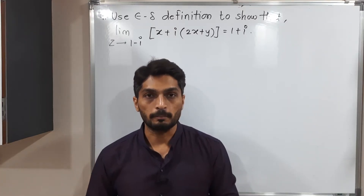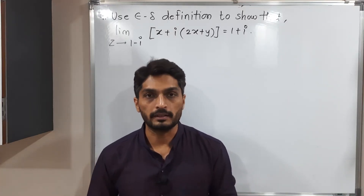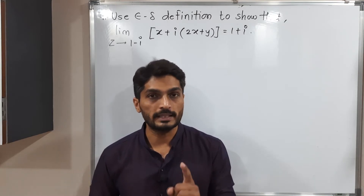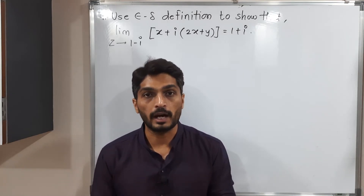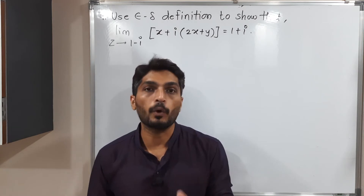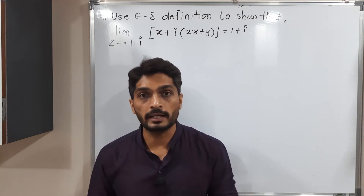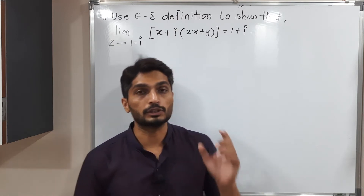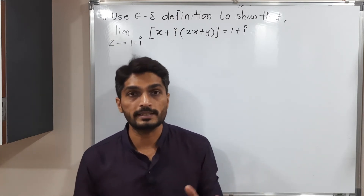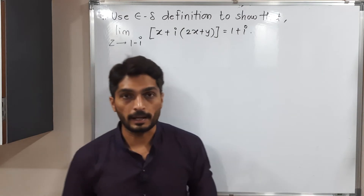Let us discuss this example. This example is of limit. In the previous video, we discussed one example of limit. So the same type of example we have — just the function and a point are different. Using the epsilon-delta definition, we have to prove that the limit of that function, f of z, is equal to 1 plus i.